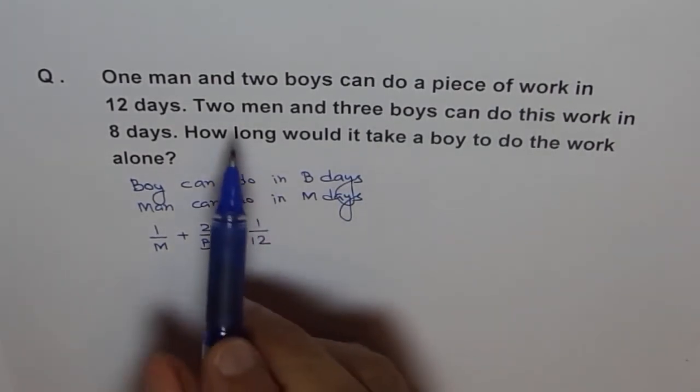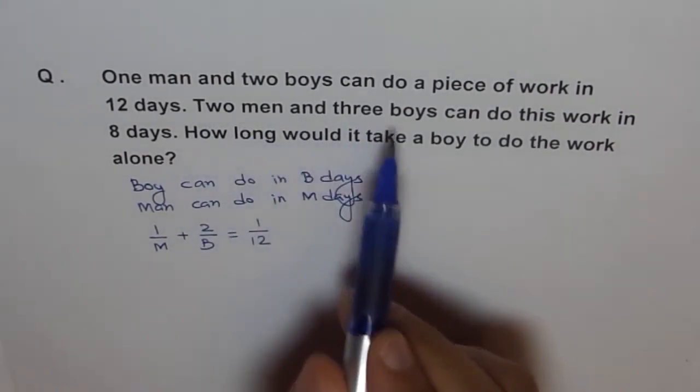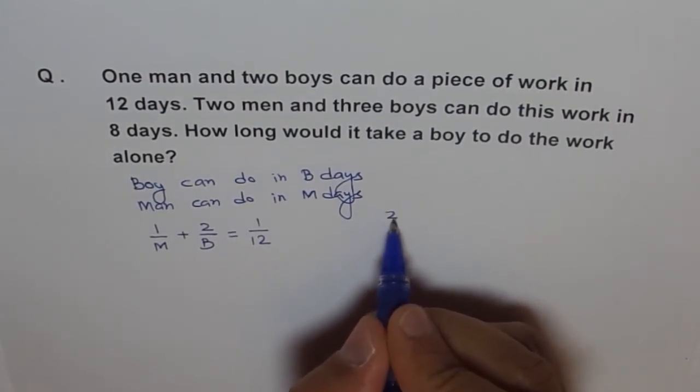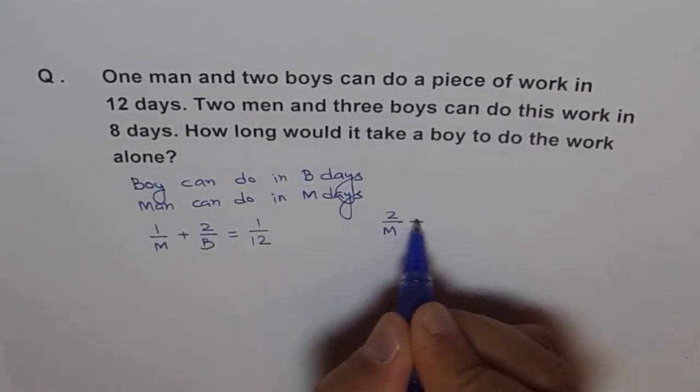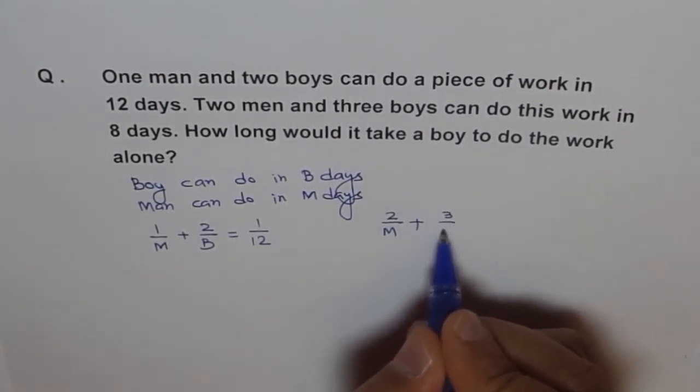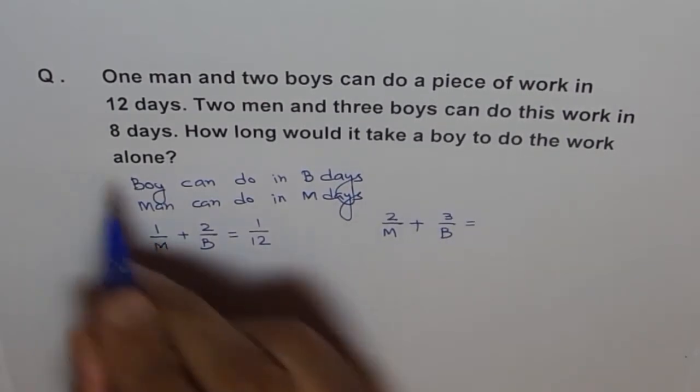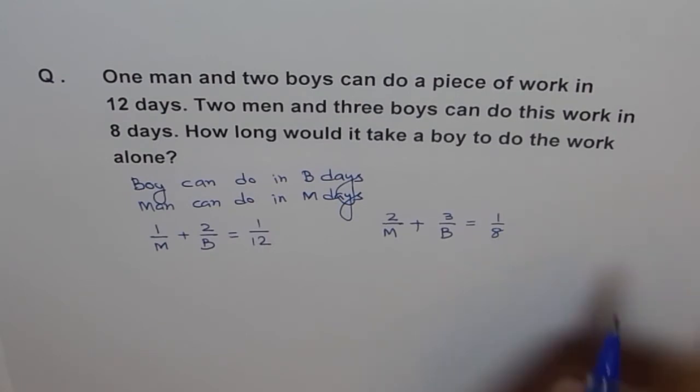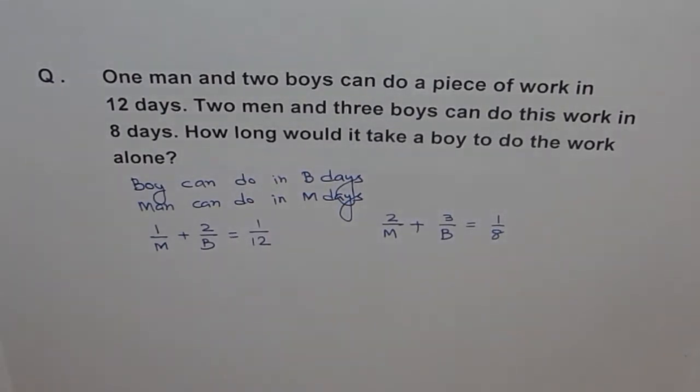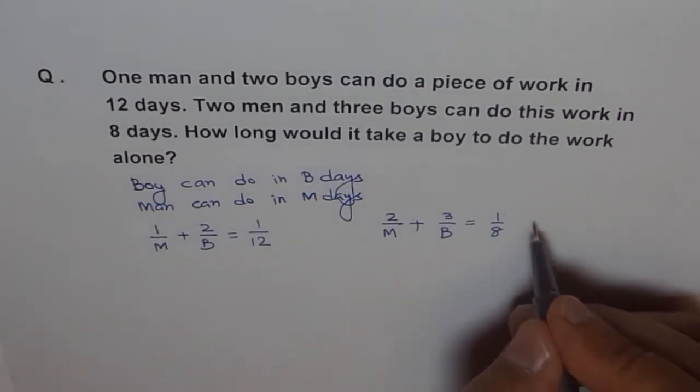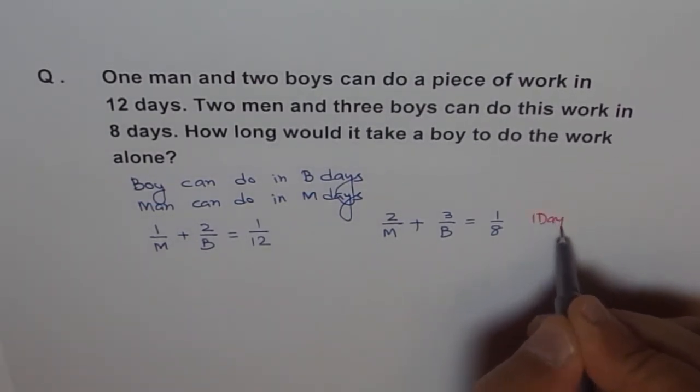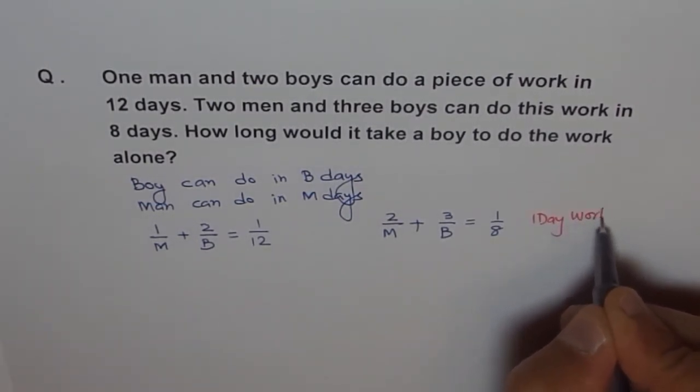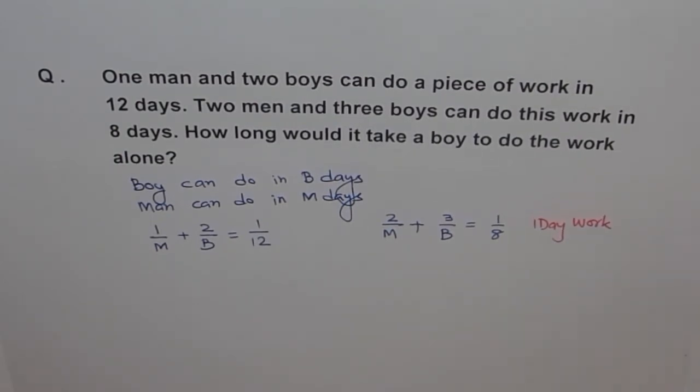Now second one. Second case is 2 men and 3 boys. So let's say 2 men is 2 over M plus 3 boys, so 3 over B equals to 8 days, so 1 over 8. In one day how much work will be done? So this is the equation which summarizes one day effort. One day work. That is how we make this equation.